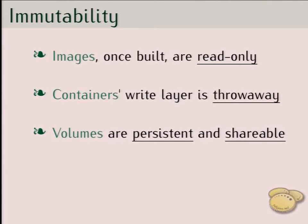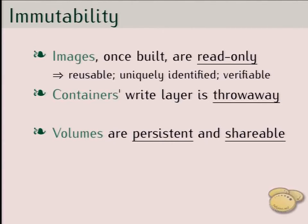Immutability is very important. Images, once built, are read-only. Containers right there are throwaway — volatile. Volumes are the place where persistent and mutable data lives. Because of that, images are reusable, uniquely identified, and verifiable. Once an image is built, it is set — a single set of files that can be identified by a checksum or a crypto signature. You can verify that it's still the same, share it, publish it, and reuse it multiple times.